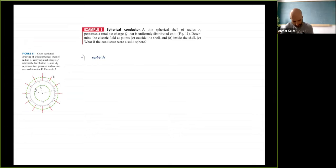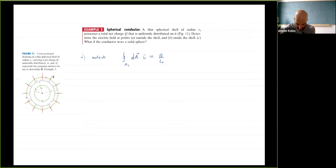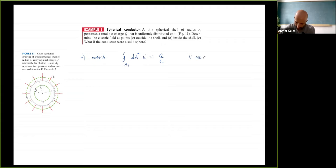Part (a), outside: I form a Gaussian surface A1 outside the shell. Gauss's Law says the total flux on A1 equals Q over epsilon-naught. The electric field is constant on this spherical surface, so I can write E times 4 pi r squared equals Q over epsilon-naught. Therefore E equals 1 over (4 pi epsilon-naught) times Q over r squared.